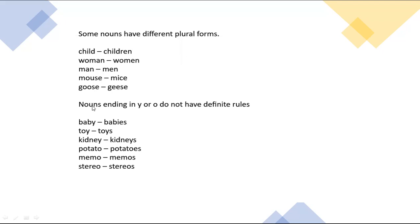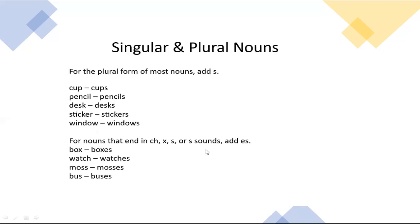Nouns ending in Y or O don't have definite rules. For example, 'baby' becomes 'babies,' but 'toy' becomes 'toys.' Similarly, 'kidney' becomes 'kidneys,' 'potato' becomes 'potatoes,' 'memo' becomes 'memos.' The same applies to other words of this type.